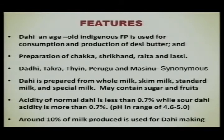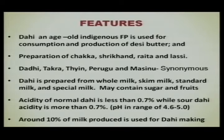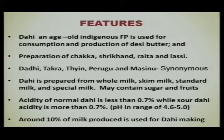Dahi is associated with therapeutic properties and cures gastrointestinal disorders. It can also be used for direct consumption and production of desi butter and subsequently ghee. Other products prepared from it include chakka, shrikhand, raita, and lassi. Synonyms used are dahi, takra, thain, and pengu. Dahi can be prepared from whole milk, skim milk, standard milk, and special milk. Acidity of normal dahi is less than 0.7 percent, while sour dahi has acidity more than 0.7 percent. Around 10 percent of milk produced is used for dahi making, with production continuously increasing in both organized and unorganized sectors.